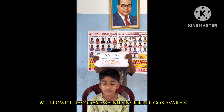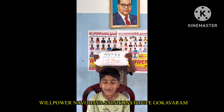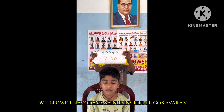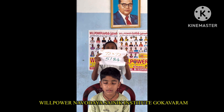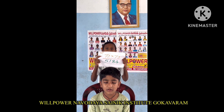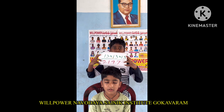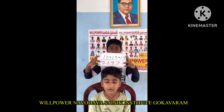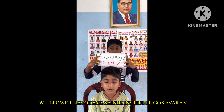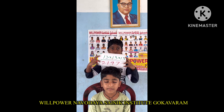44 square: 44 into 44 — 1936. Next. 72 square: 72 into 72 — 5184. Next. 13 cube: 13 into 13 into 13 — 2197. Next.